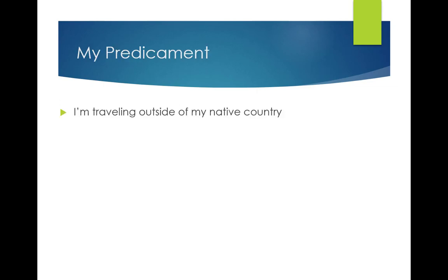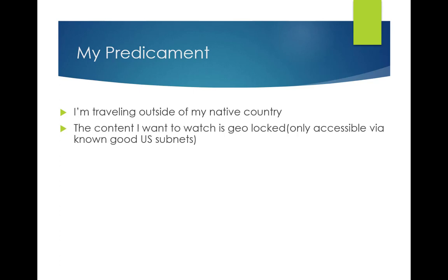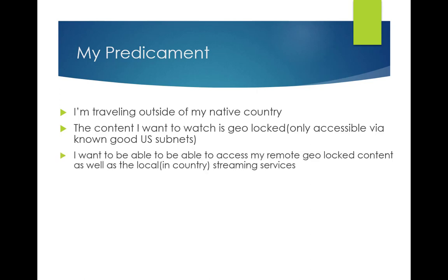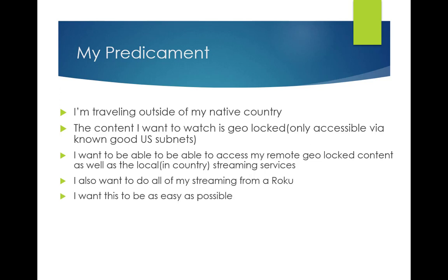So my predicament: I'm traveling outside of my native country. I'm from the US and I'm in Australia. The content I want to watch is geo-locked — it's only accessible via known good subnets in the United States. It's a pretty common problem. I want to access this content remotely from Australia, via my Roku because I like to just hook it up to the TV. And I want this to be as simple as possible — I don't want to have to think about it.